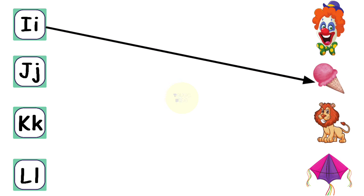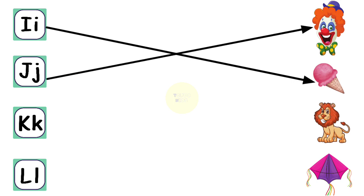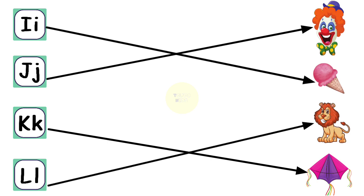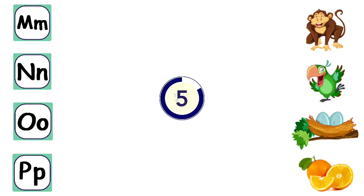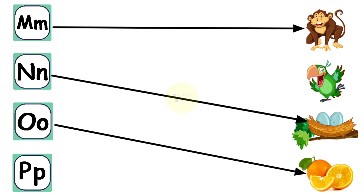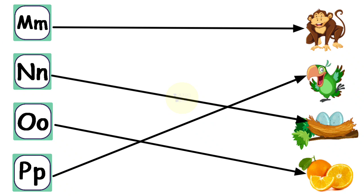I for Ice Cream, J for Joker, K for Kite, L for Lion, M for Monkey, N for Nest, O for Orange, P for Parrot.